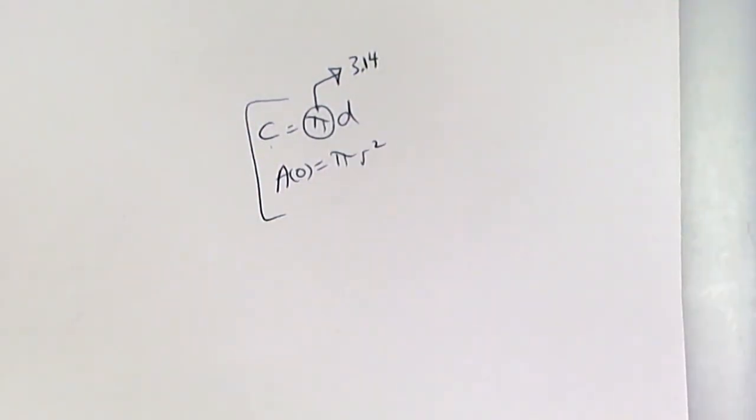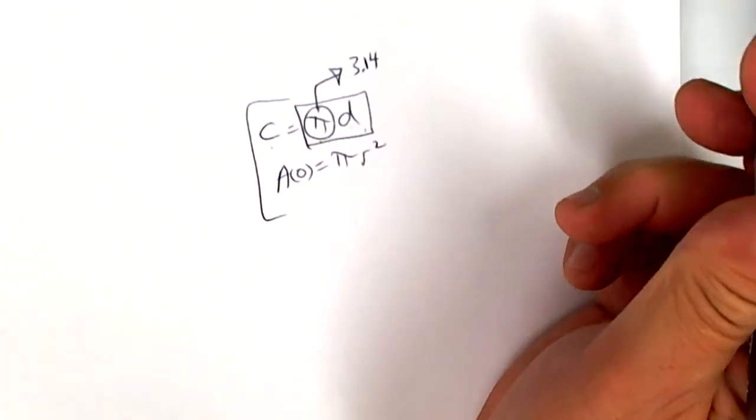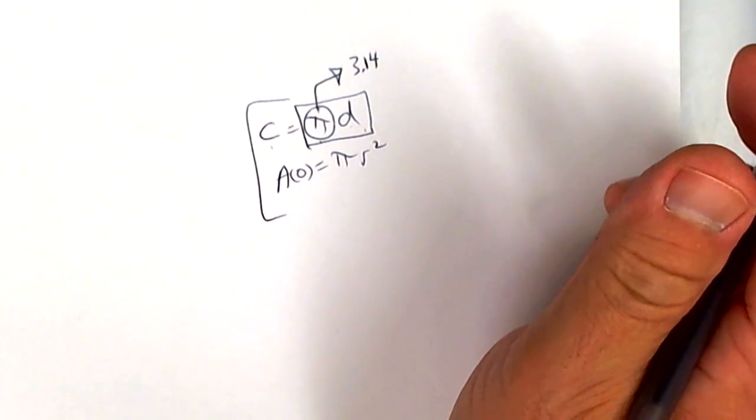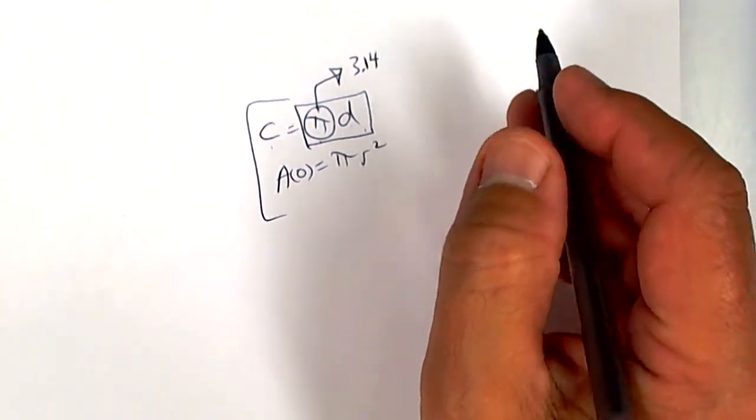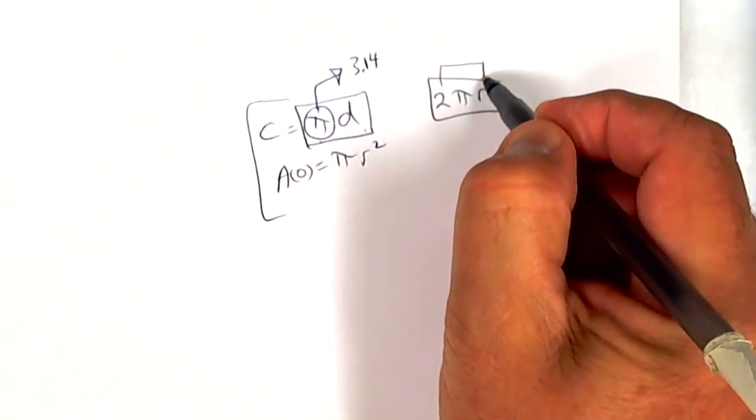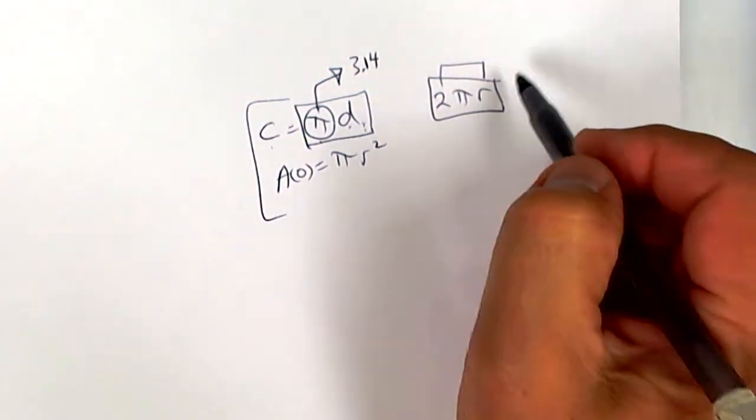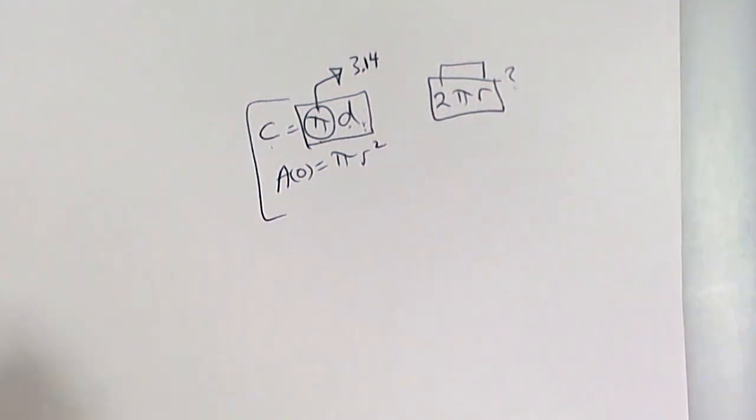There is a different way you can write this one, but I like pi times diameter. That's the one we're going to use. I think they do 2πr. 2πr is the same thing because two times the radius equals the diameter, but I like pi times diameter. You can use this one if you want.